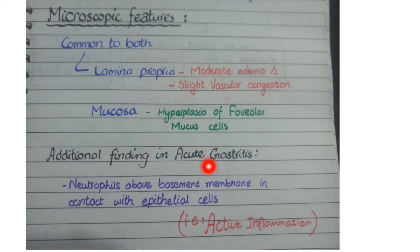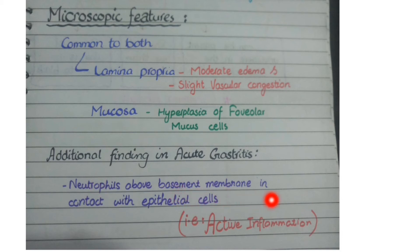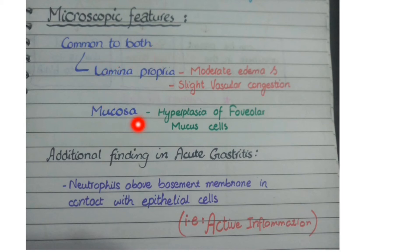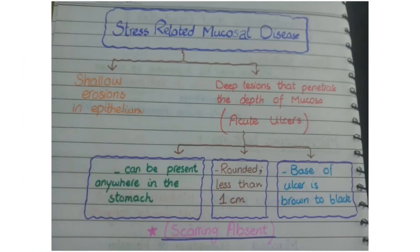In acute gastritis there is an additional finding: since 'itis' means inflammation, you see acute inflammatory cells — specifically neutrophils above the basement membrane in contact with epithelial cells. This presence of neutrophils above the basement membrane is called active inflammation. In gastropathy, no such neutrophils are seen; only the two common features are present. In acute gastritis, you see those two features plus neutrophils above the basement membrane, i.e., active inflammation.